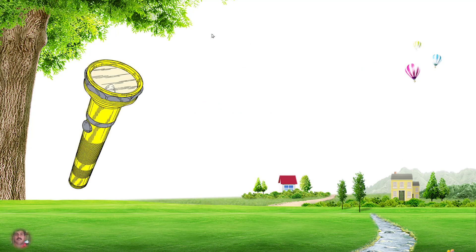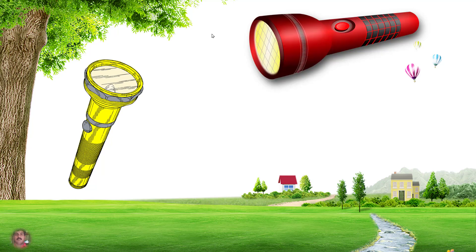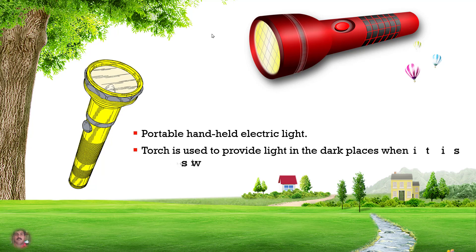Guess this one - yes, this is the torchlight. This gadget is useful at nighttime to find out hidden places and dark places. It produces light when we are in the dark. It is a portable handheld electric light. The torch is used to provide light in dark places when it is switched on. In rainy season, electricity frequently disconnects - at that time we can use this torch light.